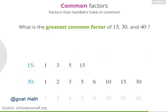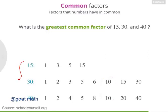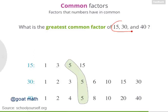Nicely done. Now if we were just looking at 15 and 30, the GCF would be 15, right? And if we were just looking at 30 and 40, the GCF would be 10. But because we're looking at all 3 numbers at the same time, the greatest common factor is 5. That's the largest number that's a factor of 15, 30, and 40.